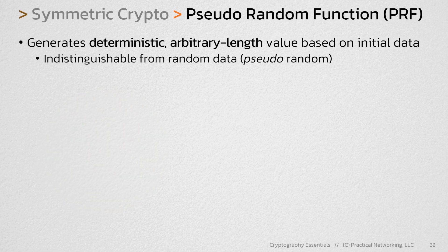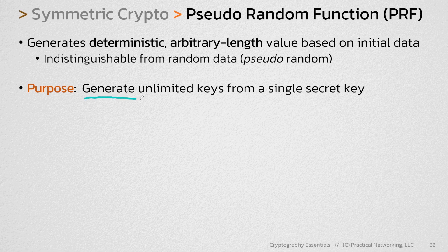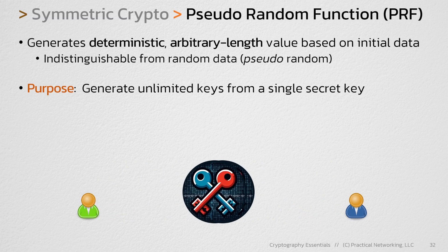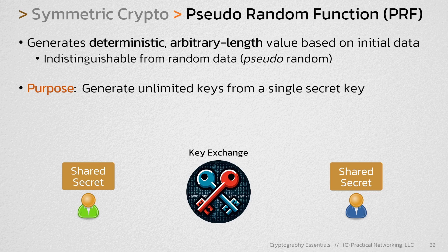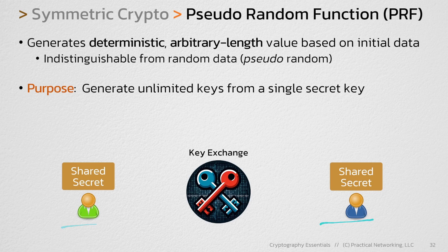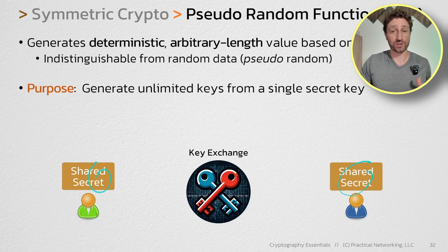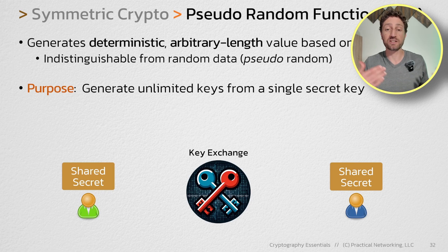The purpose of a PRF is to take a single key and use it to generate an unlimited number of keys. For example, let's say the green and blue user want to speak securely to each other. One thing they could do is use symmetric encryption, but symmetric encryption requires a secret key. In order to get that secret key, they can do a key exchange. The result of a key exchange will be some sort of shared secret that only these two users will have. A key exchange allows two users to establish a shared secret over an unsecured medium — just a bunch of ones and zeros that happen to be identical — and these users can absolutely use that shared secret as the key in a symmetric encryption.